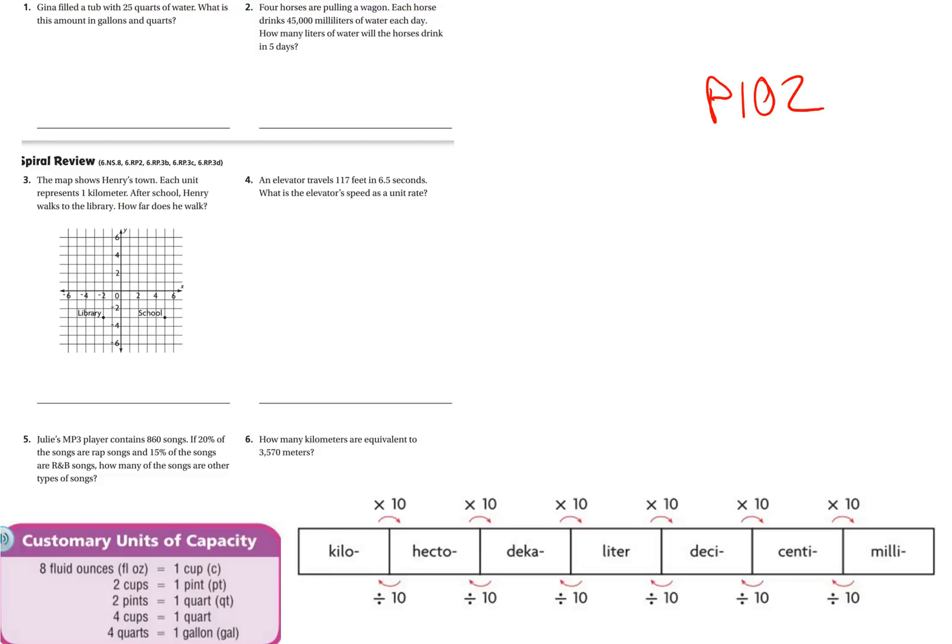All right, Gina filled a tub with 25 quarts of water. What is this amount in gallons and quarts? So it's going to be gallons but with some quarts left over because there's four quarts in a gallon. So I take my 25 quarts, I divide it by four. This is going to give me my gallons, and then whatever my remainder is, that's going to be my quarts.